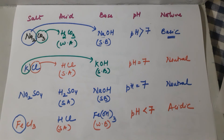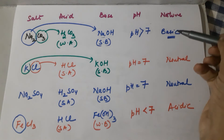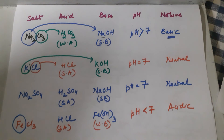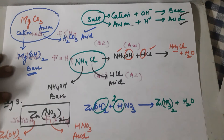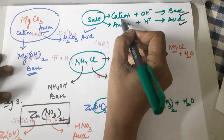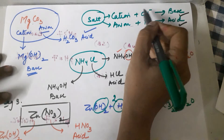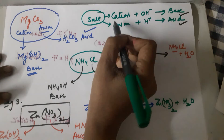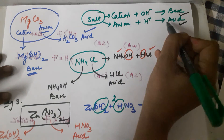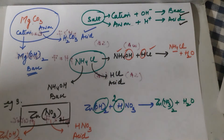We have now completed the classification of salts, identifying salts as basic, neutral, or acidic. Remember two things: take the cation of the salt, add OH⁻ to make it a base; take the anion of the salt, add H⁺ to make the acid.